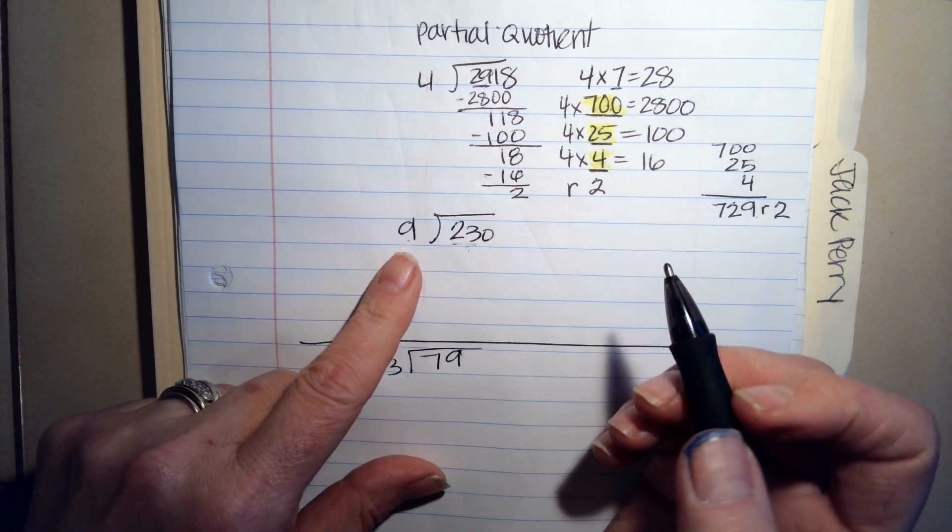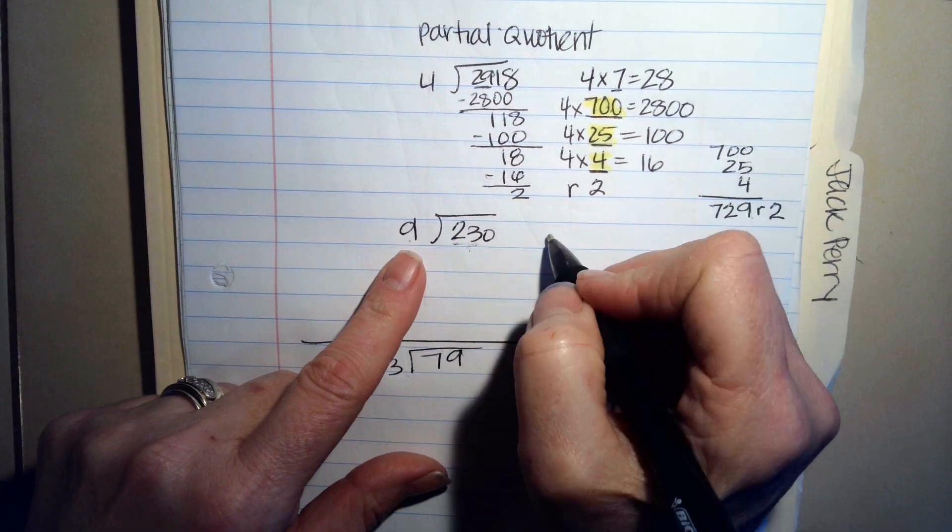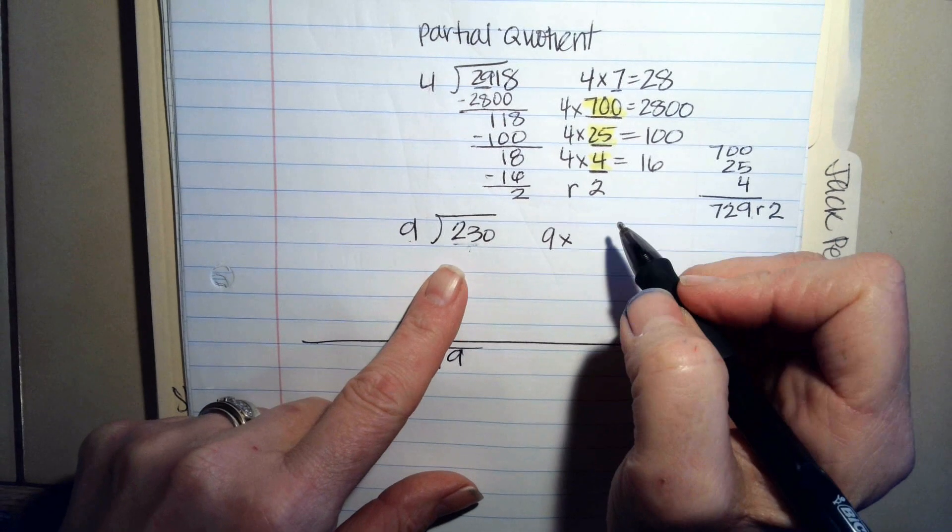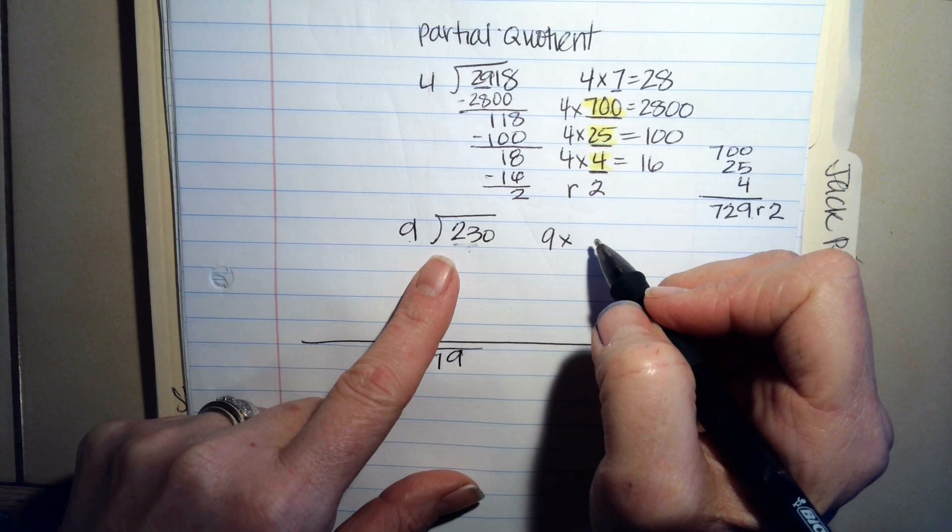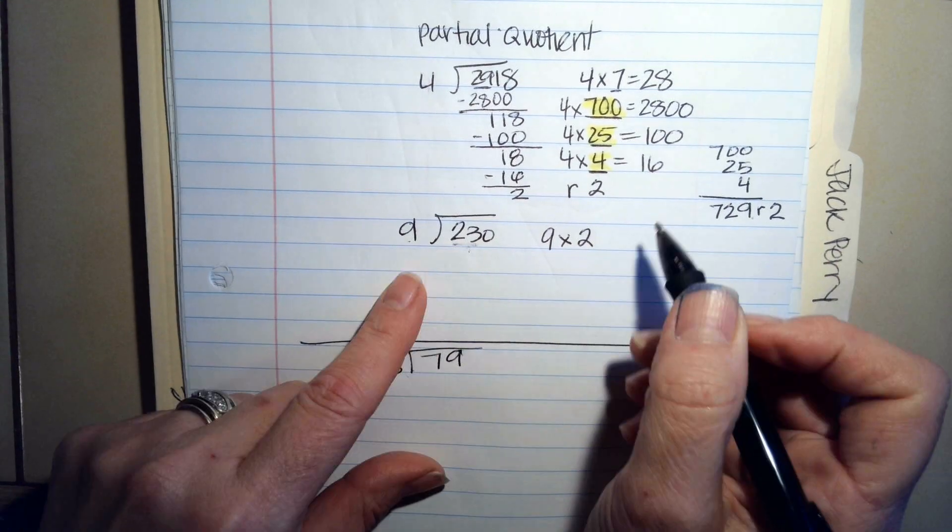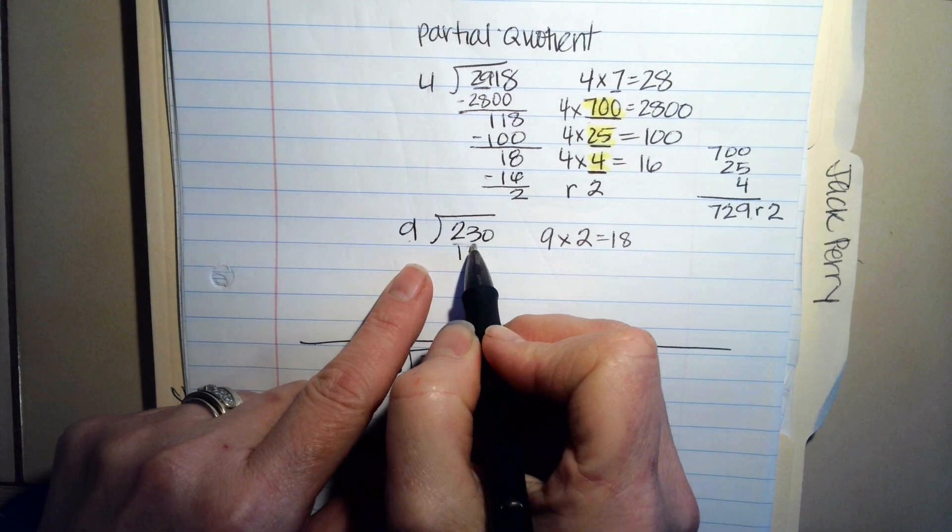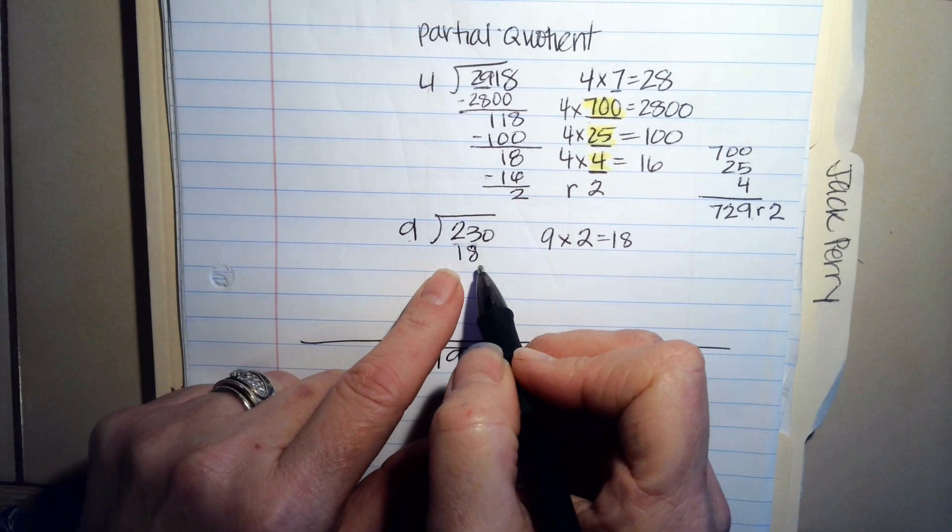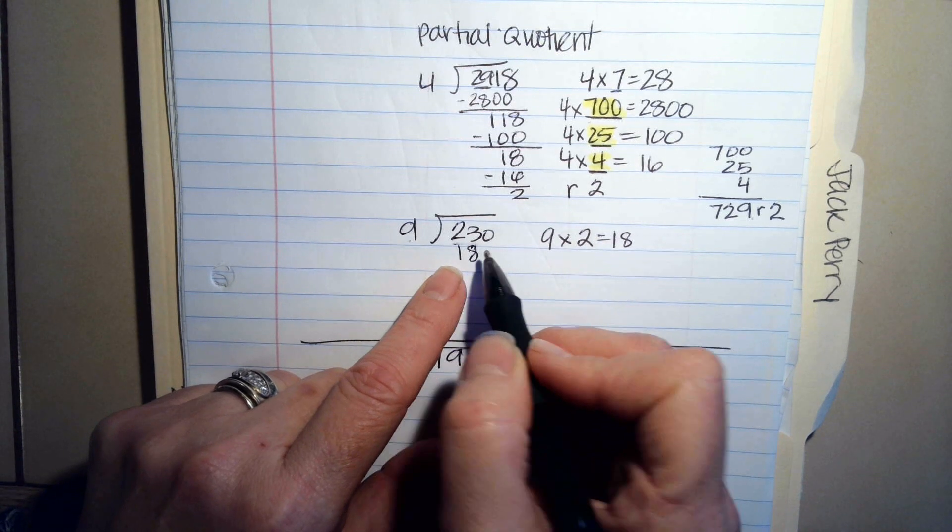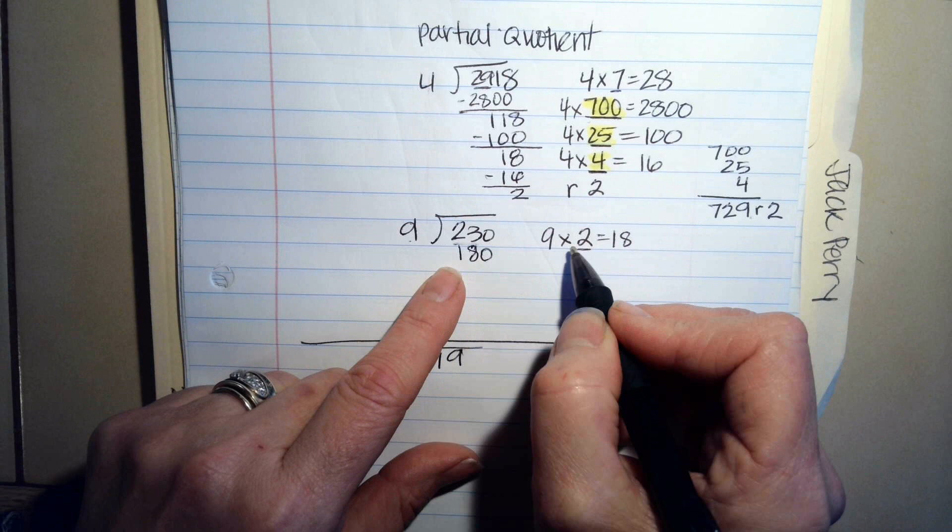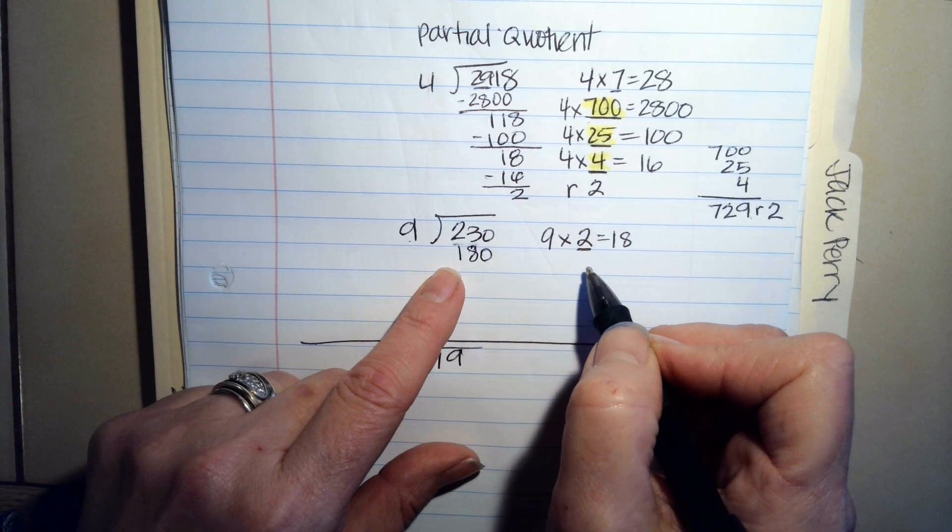Yeah, but it's not 9 times 18. It's 9 times what? So 9 times 2 is 18, right? So I'm going to use that fact family. But it's not 18 that we need. It's 180. So this isn't really a 2. It's a 20.